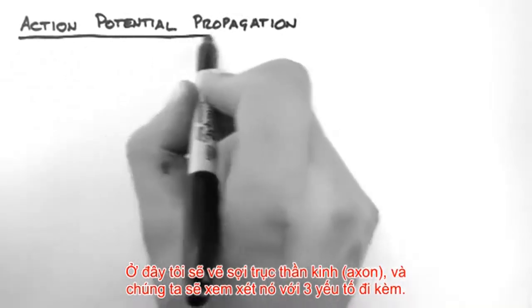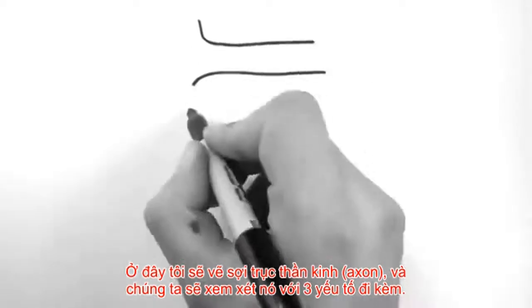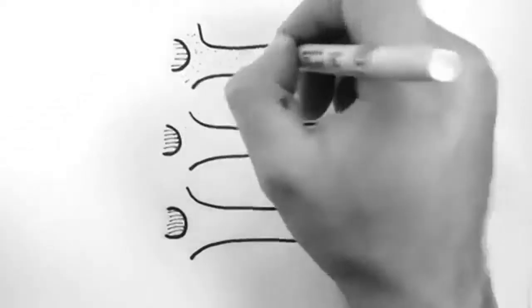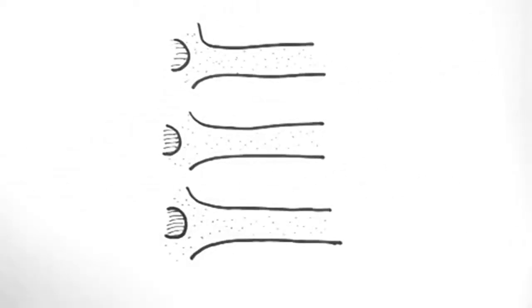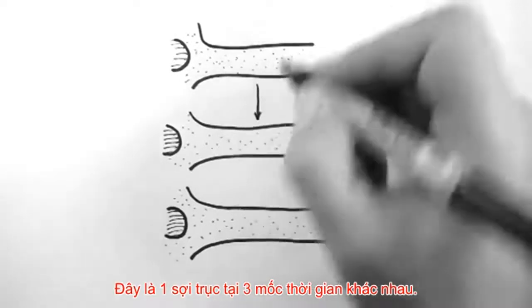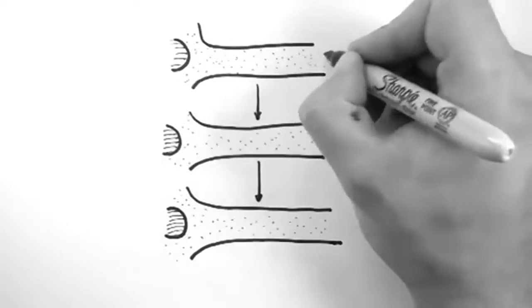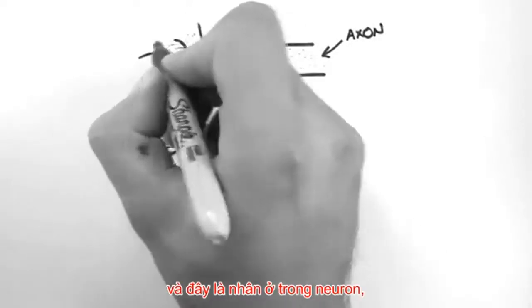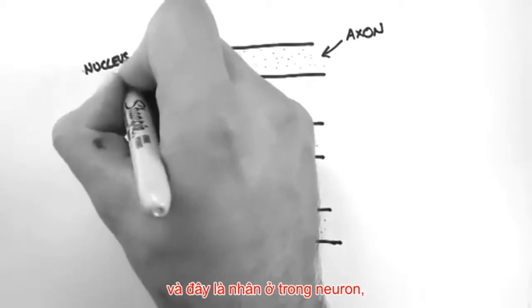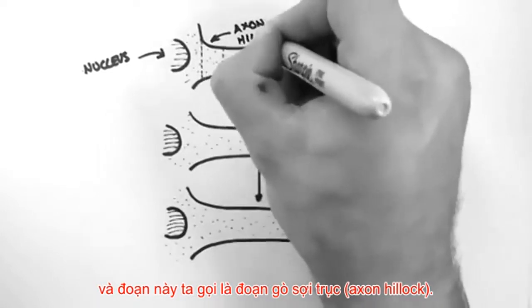So I'm going to draw up an axon and we're going to have a look at this axon at three different points in time. This is the same axon at these three different points in time. So let's get oriented. This is the axon and this is the nucleus in the body of the neuron. And this segment here is called the axon hillock.